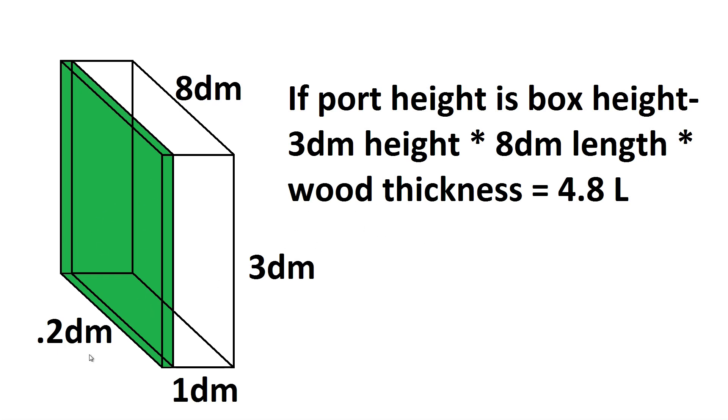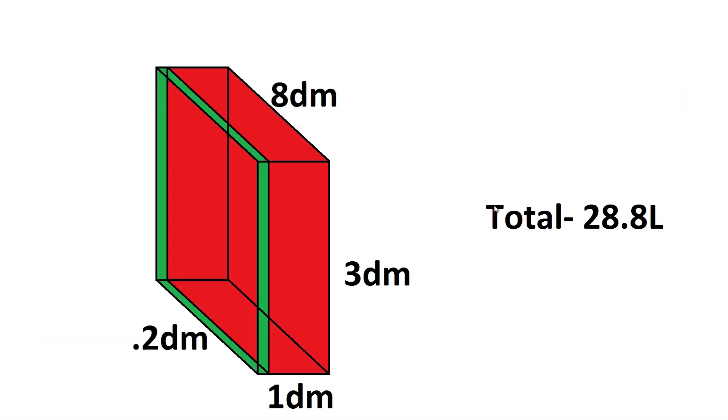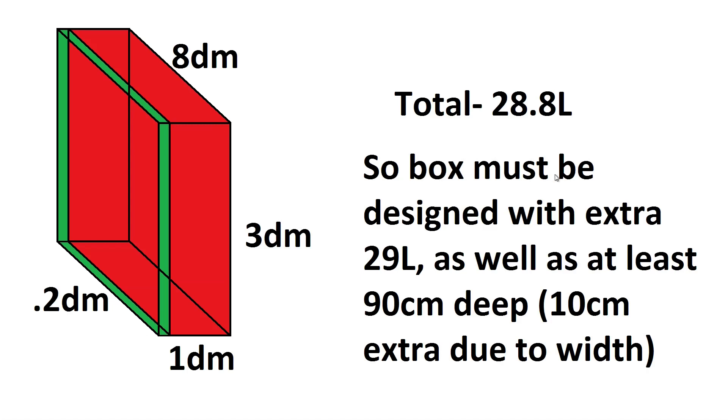So the wood thickness, by the way, is 20 millimeters or two centimeters. So the total volume for the port is 28.8 liters, so the box needs to be designed with an extra 29 liters as well as at least being 90 centimeters deep in order to fit the port as well as a bit of air at the end of it so it can work its way around the corner into the enclosure.